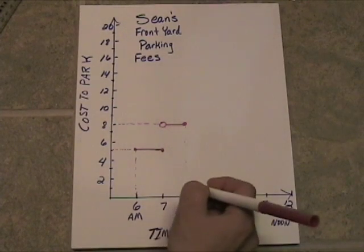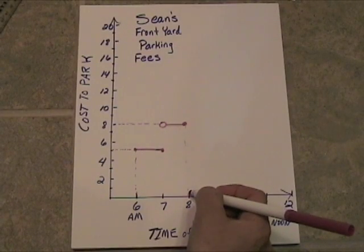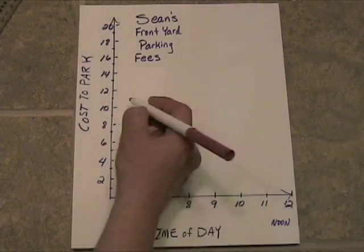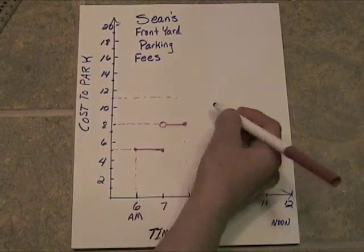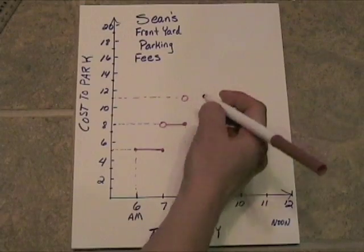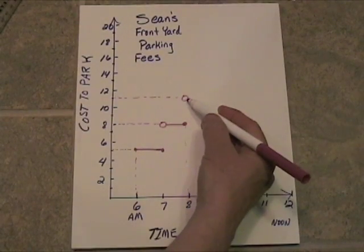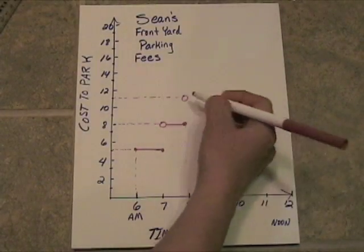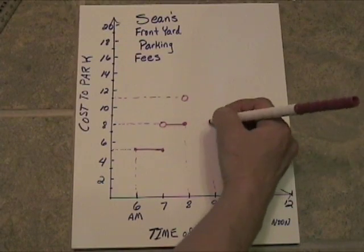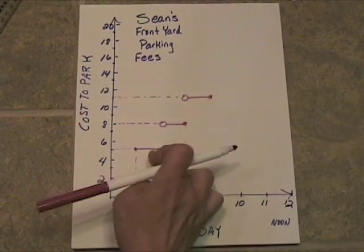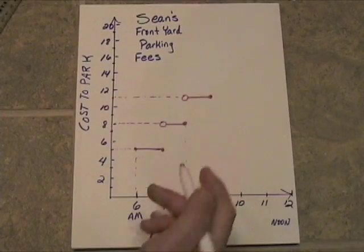From the instant after 8, we are going to be charged $11 — $3 more than $8. So we come over to $11, and directly after 8 o'clock we put an open circle there. It doesn't include the 8, but everything right after — instantly after 8 o'clock — is going to be charged at $11 all the way until 9 o'clock in the morning. And so there we see the steps beginning to form.